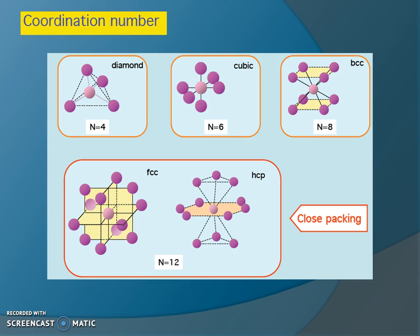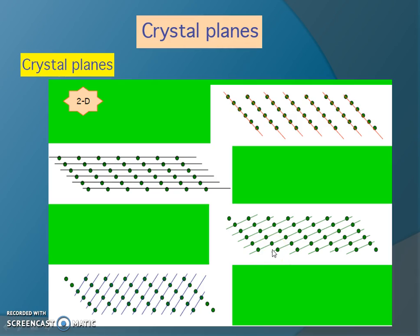The coordination number is the number of atoms that are very close to any given atom — the closely packed nearest-neighbor atoms. In a diamond structure, there are 4 nearest atoms, so the coordination number is 4. In a simple cubic system, there are 6 nearest atoms at the same distance. For body-centered cubic, it is 8, and for face-centered cubic, it is 12 — the most closely packed arrangement.